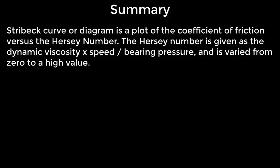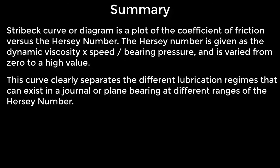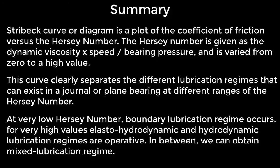To summarize: the Stribeck curve or diagram is a plot of the coefficient of friction versus the Hersey number. The Hersey number is given as the dynamic viscosity multiplied by speed divided by bearing pressure, varied from 0 to a high value. This curve clearly separates the different lubrication regimes in a journal or plane bearing. At very low Hersey number, boundary lubrication occurs. For very high values, elasto-hydrodynamic and hydrodynamic lubrication regimes are operative. In between, mixed lubrication regime can be obtained. If you have any questions or comments, please write them below in the comment section.